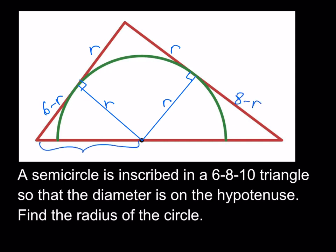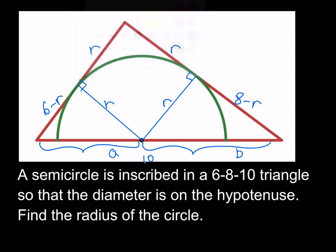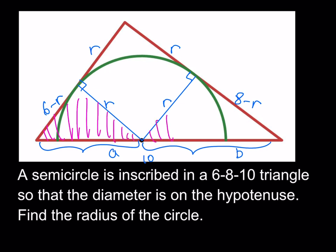Let's call these pieces a and b. We know that the hypotenuse is 10, so the whole thing is going to be 10. What I'd like to do is take these two right triangles and use the Pythagorean theorem — that's the plan for our first method.